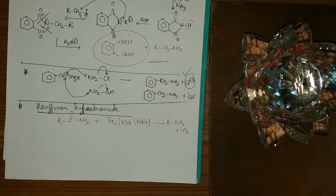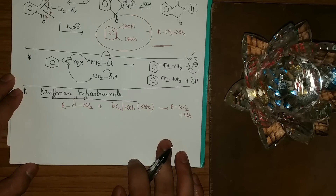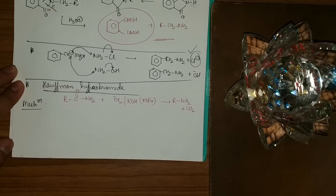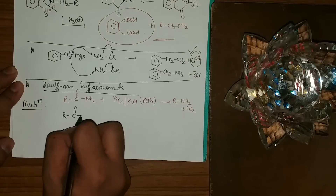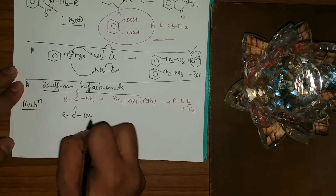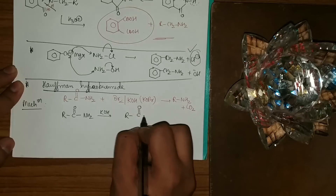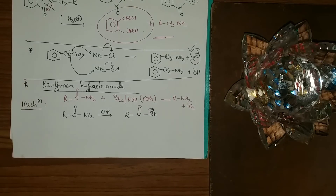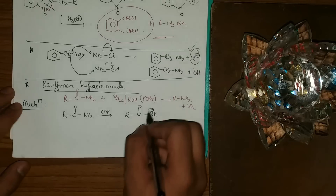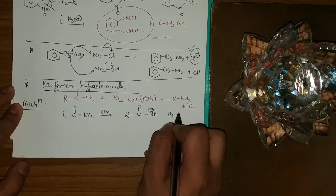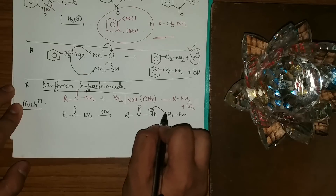Let me show the mechanism. Whenever we have a base like KOH or NaOH, the first step is removing the most acidic hydrogen. In RCONH2, the most acidic H is on nitrogen — it's removed by OH⁻, giving NH⁻. The negative is stabilized because it's directly in resonance with the C=O group.